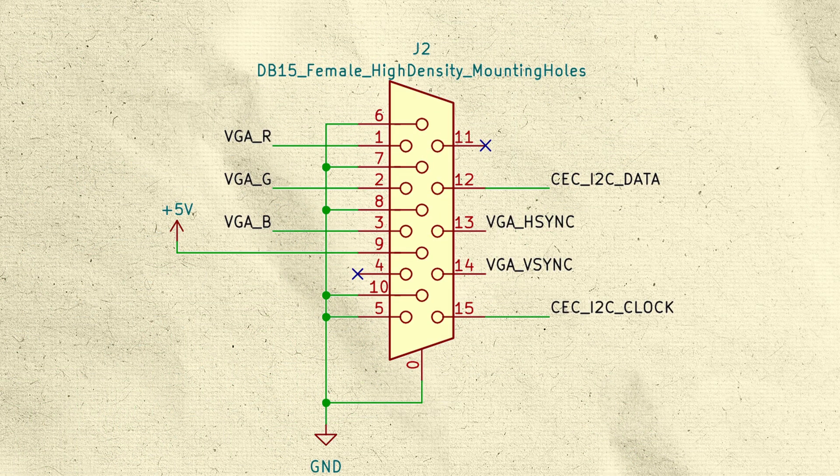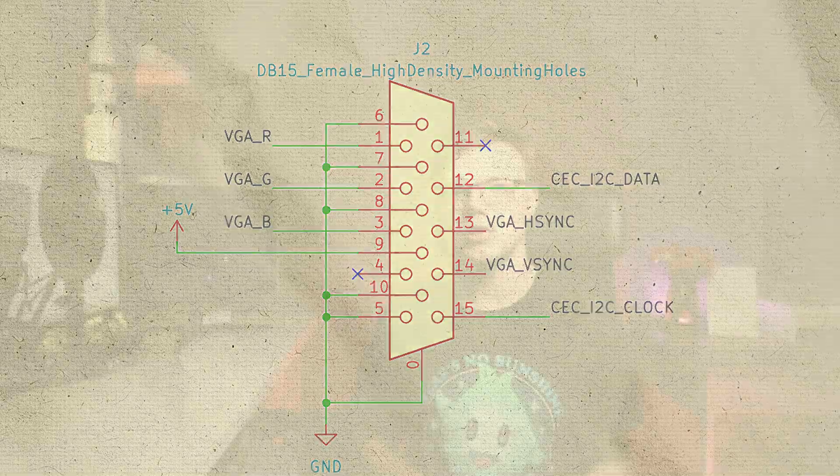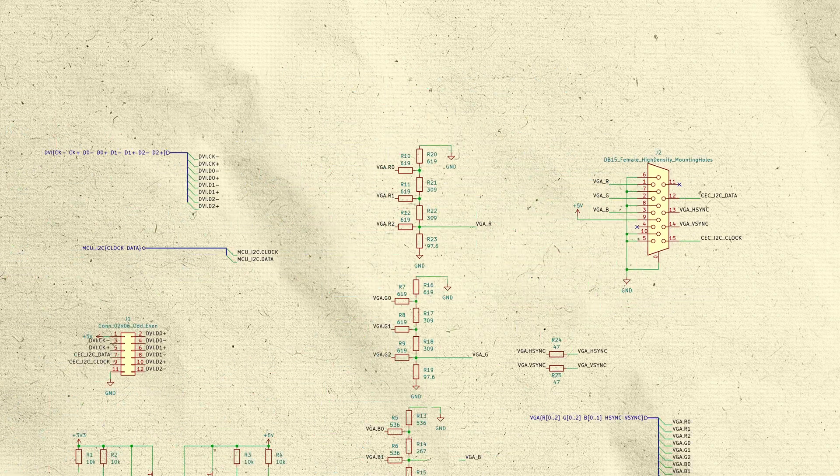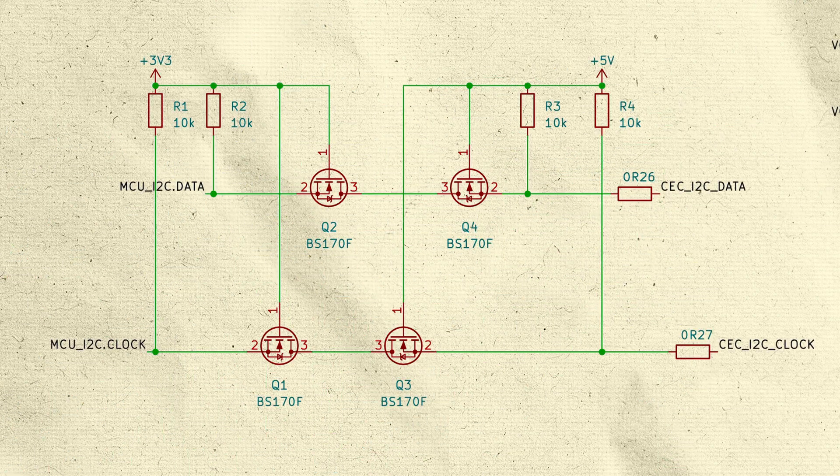I also added pins to read display information. Displays use 5V and RP2350 uses 3.3V, so I designed a simple voltage level converter using MOSFETs.